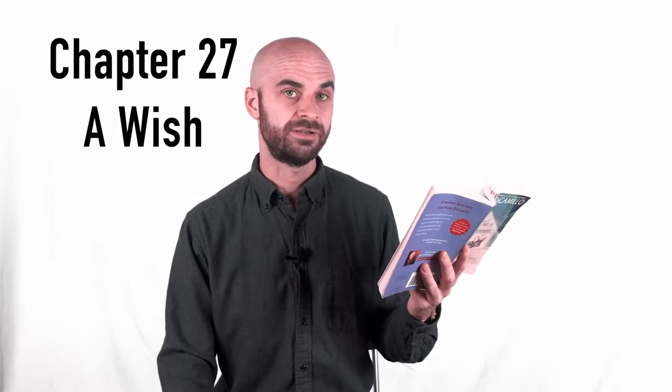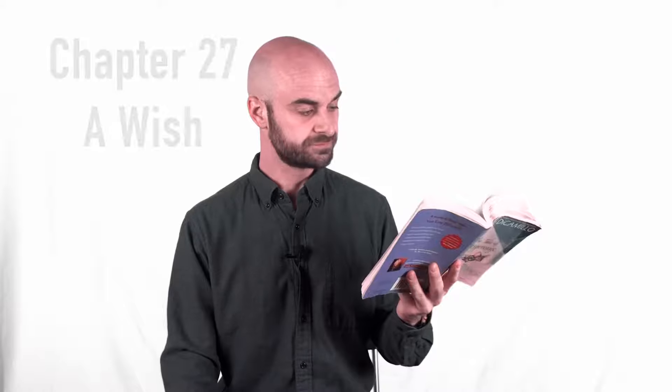Chapter 27 is called A Wish. That night, in the small dark hut that she shared with Uncle and the sheep, Mig tried to speak of what she had seen.